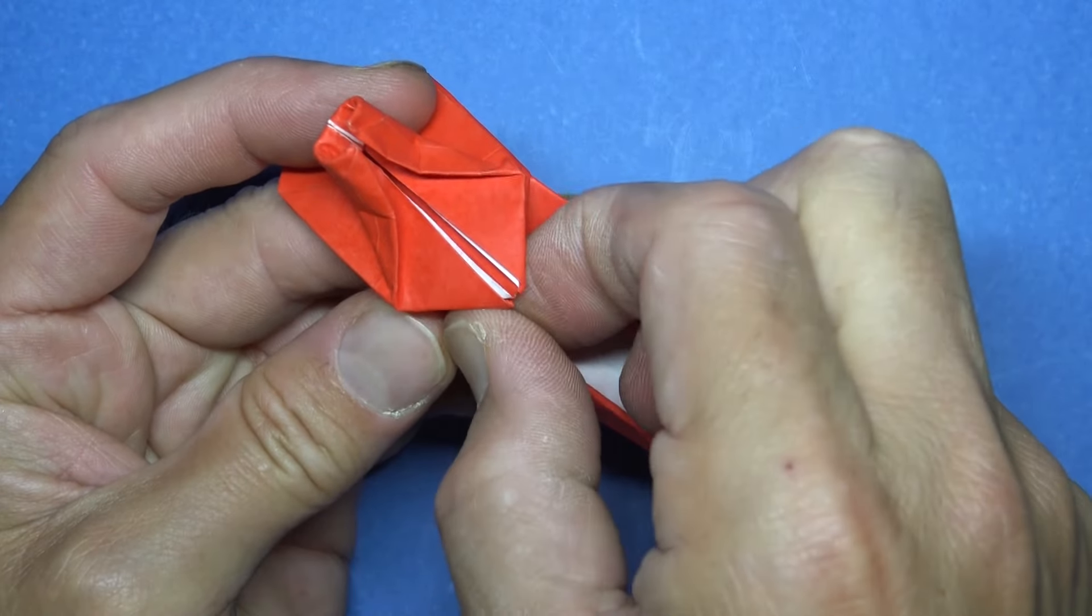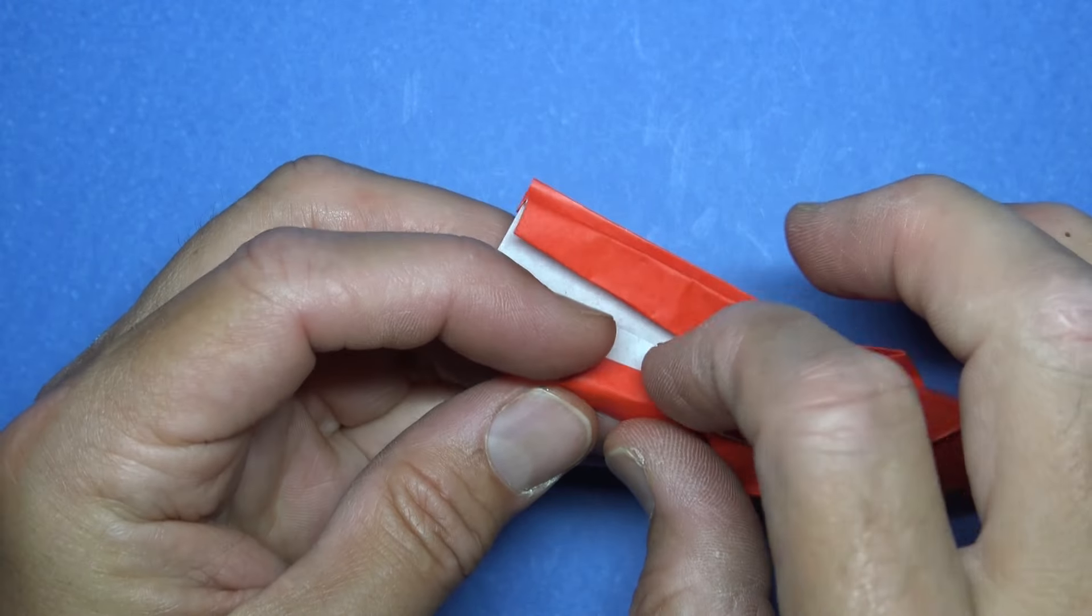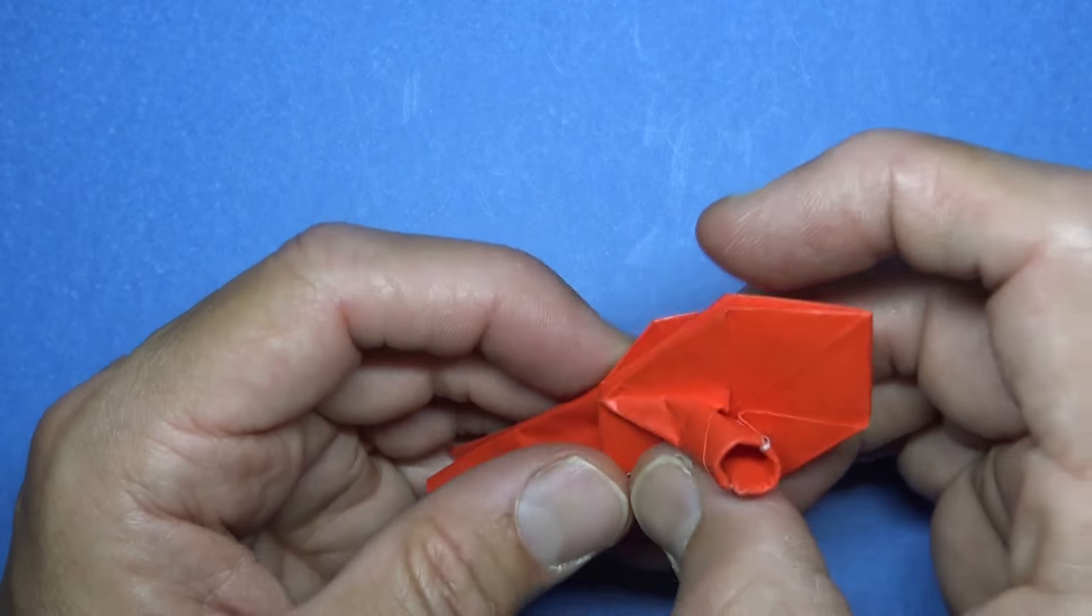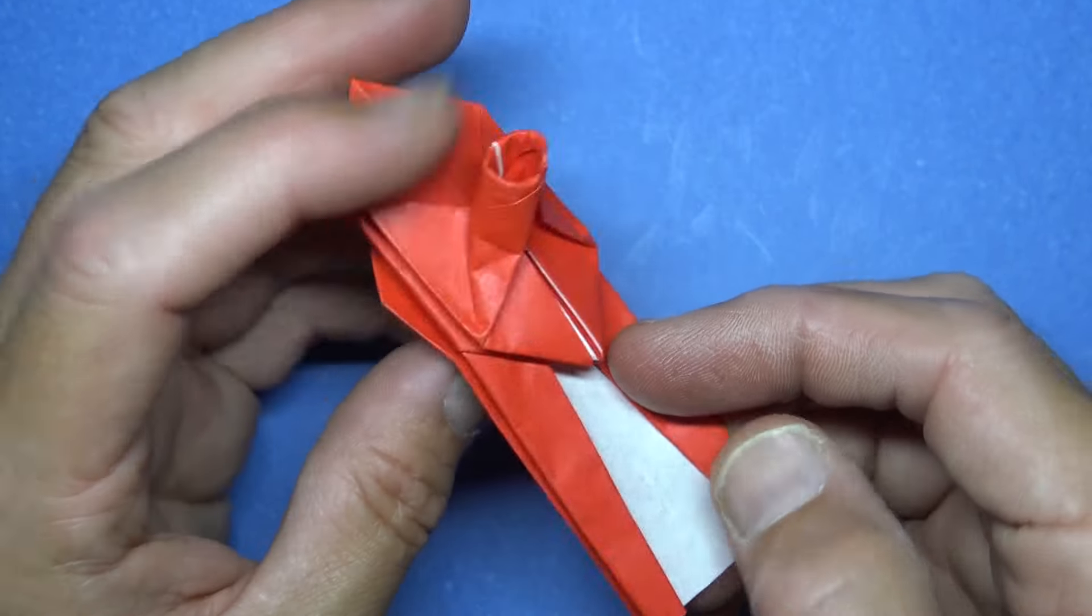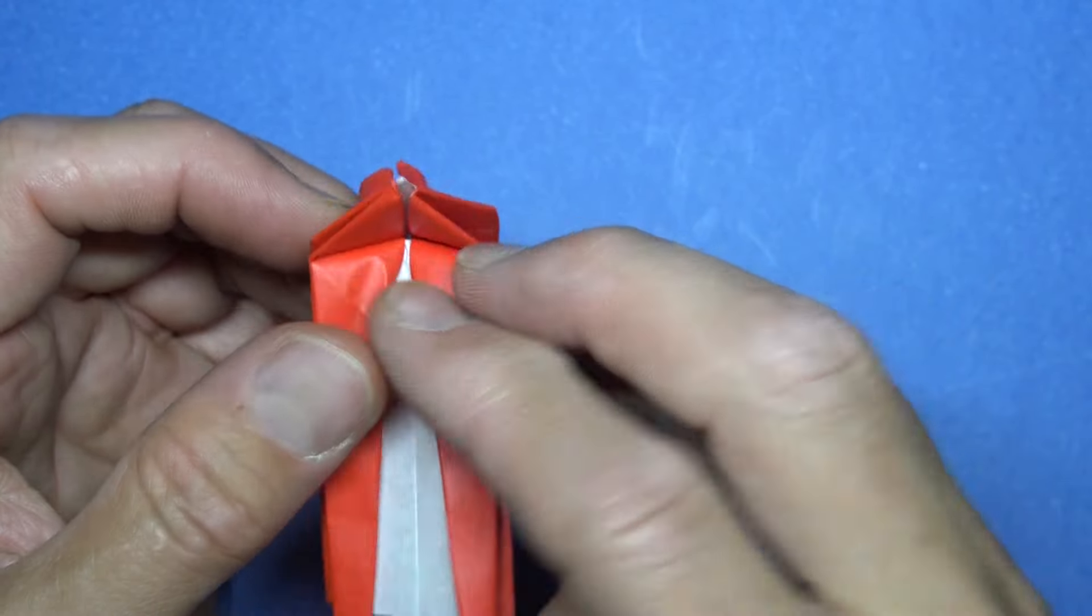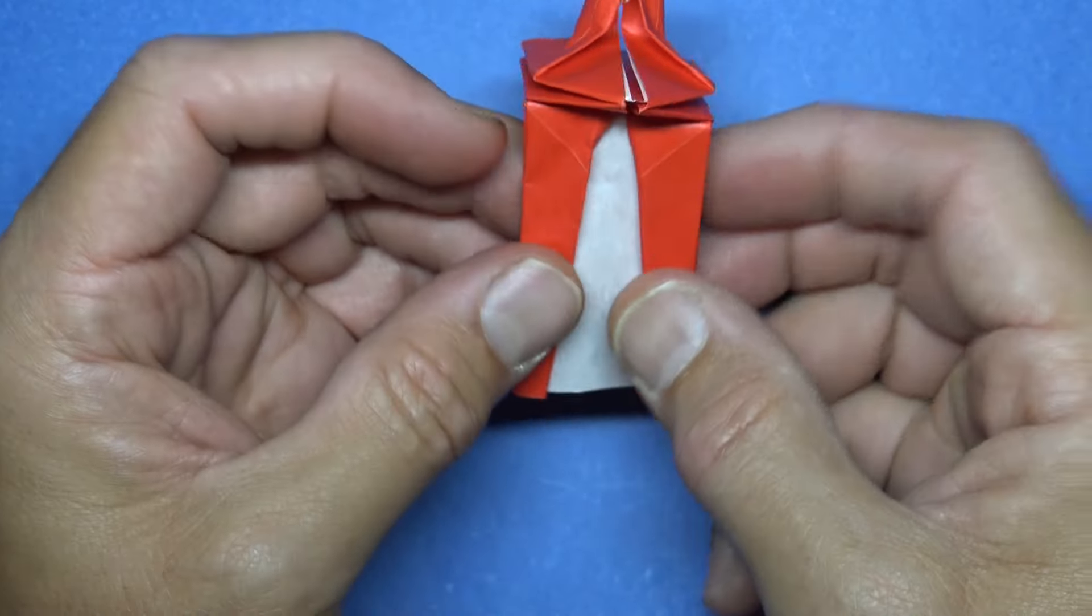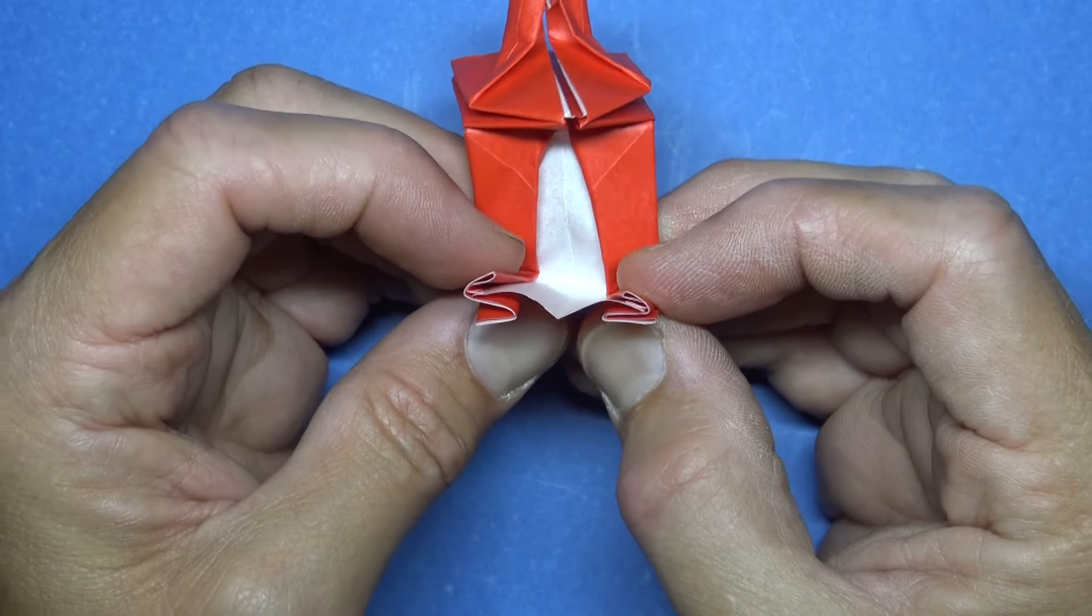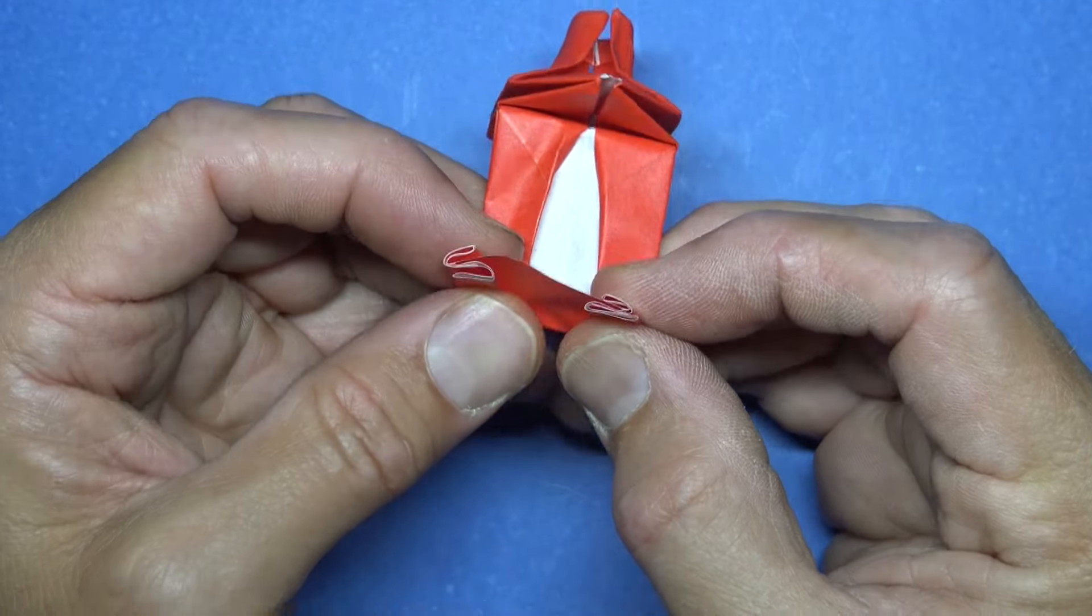And now we're going to fold this edge in. This is to taste. You can fold it in so that the fold goes all the way in there. We're just narrowing the legs. Okay. Fold this flap. The whole flap on this point. Now you don't need to fold too long there.